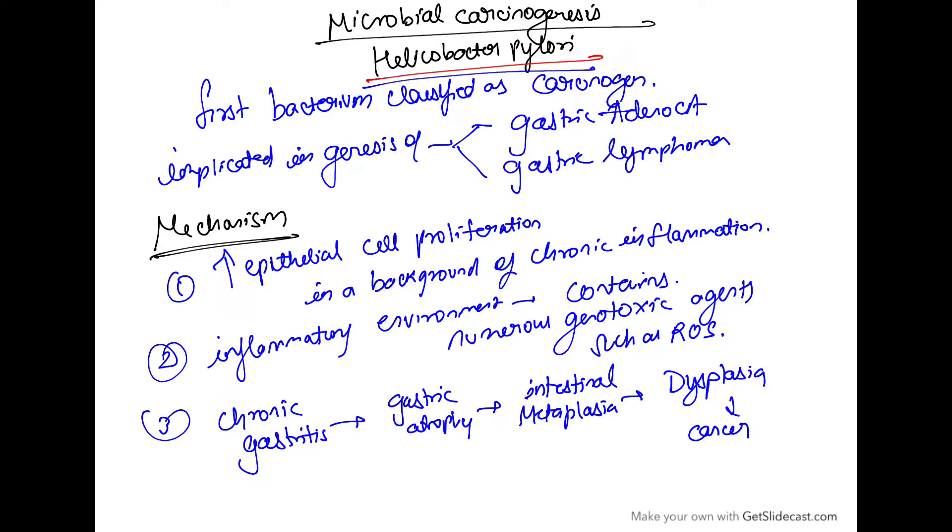Hello everyone, today in microbial carcinogenesis we are going to see Helicobacter pylori. Helicobacter pylori is the first bacterium which is classified as a carcinogen and it is implicated in the genesis of two cancers: